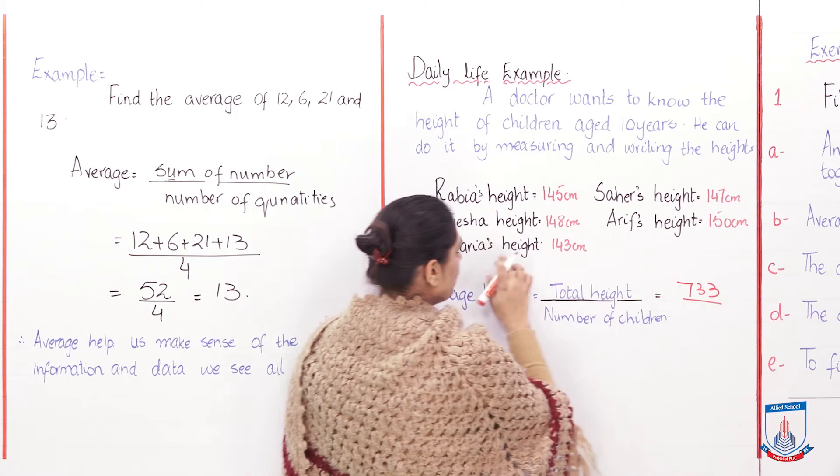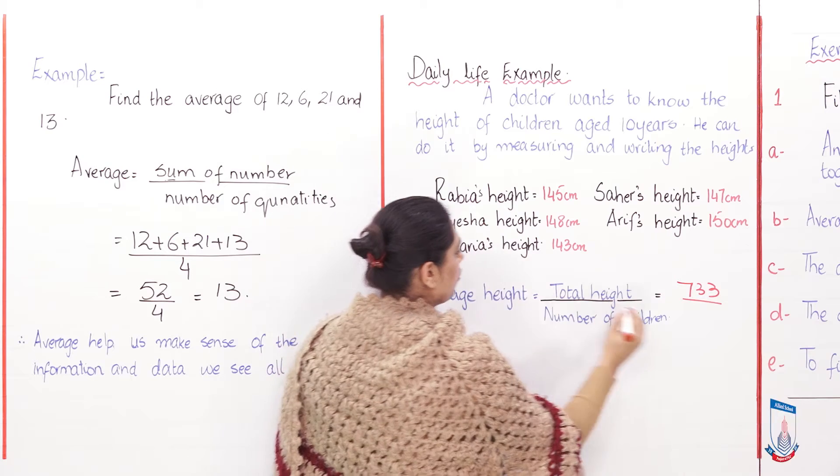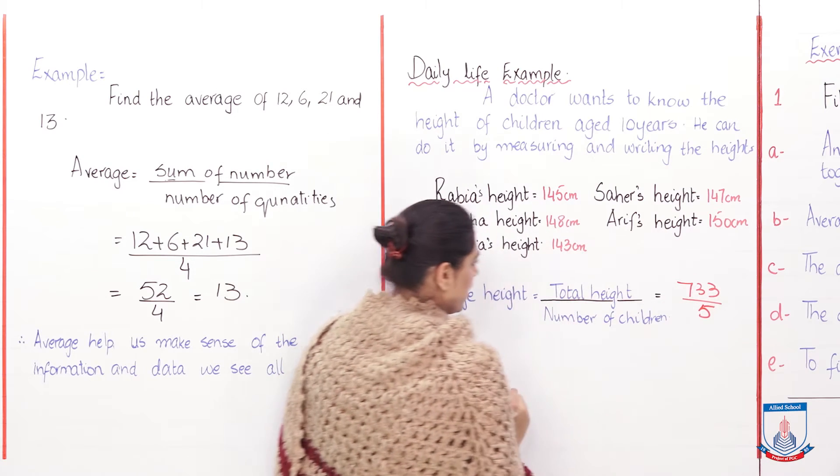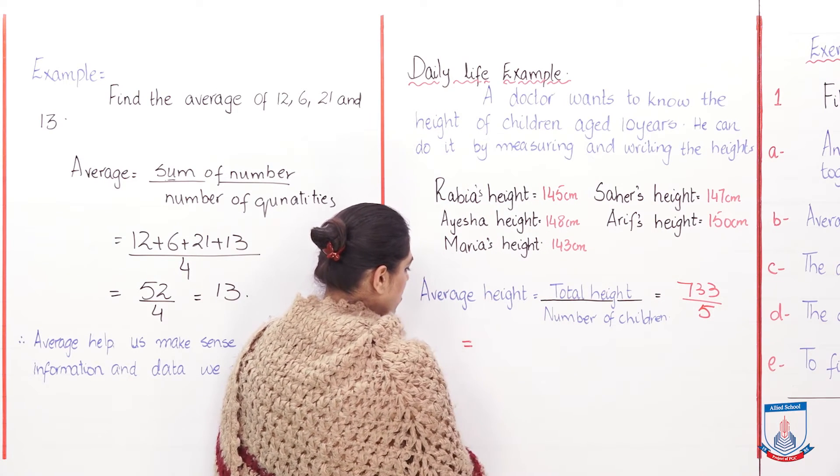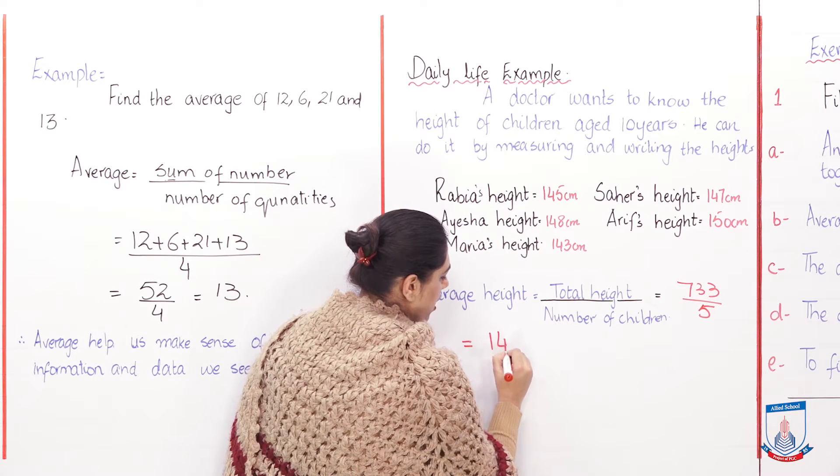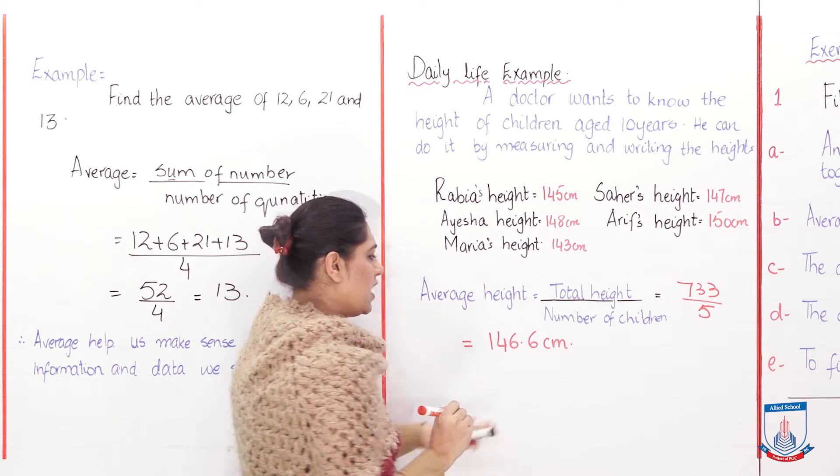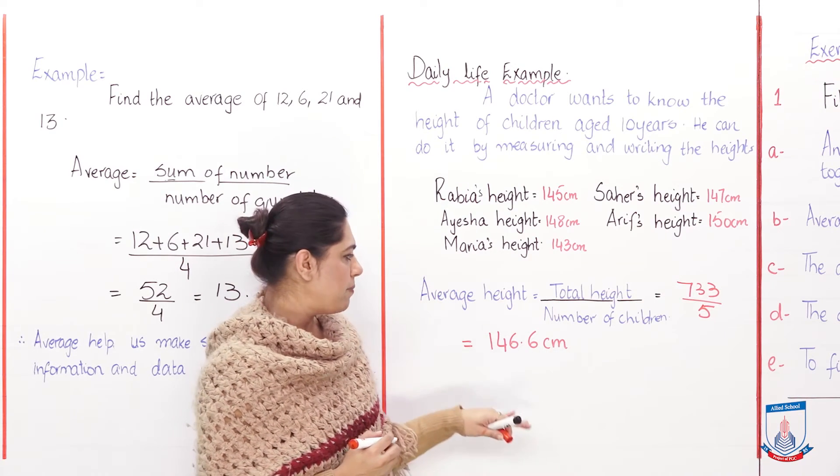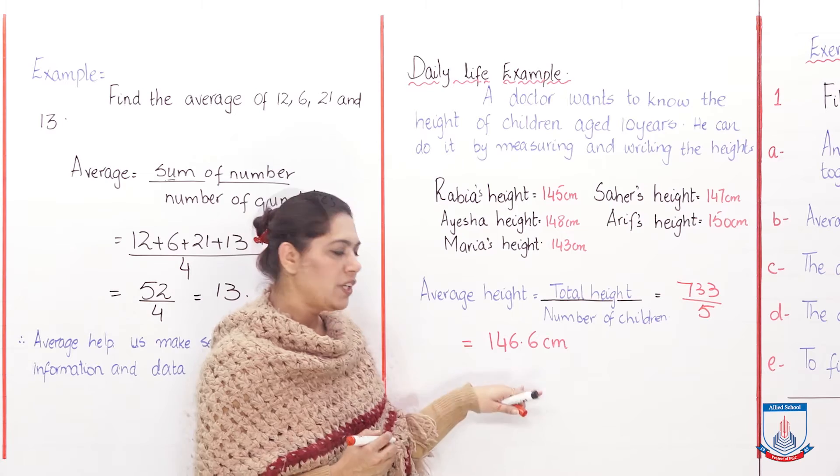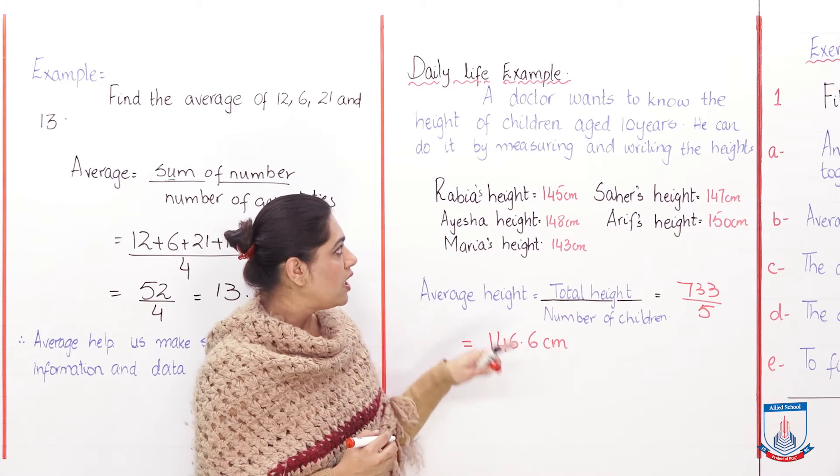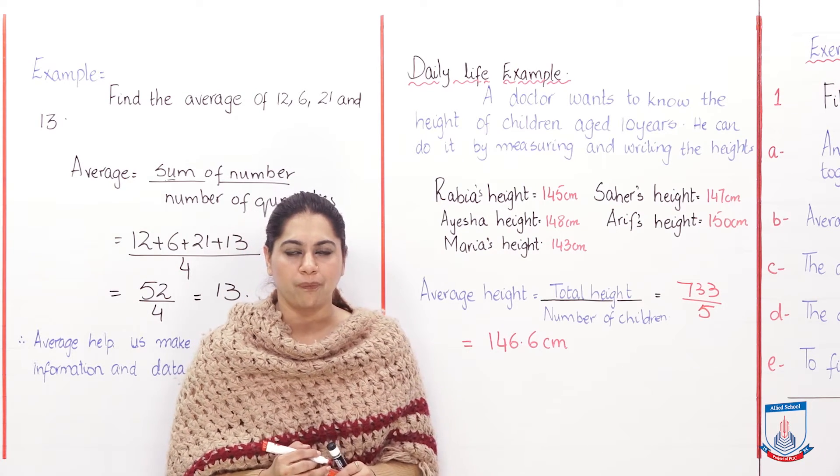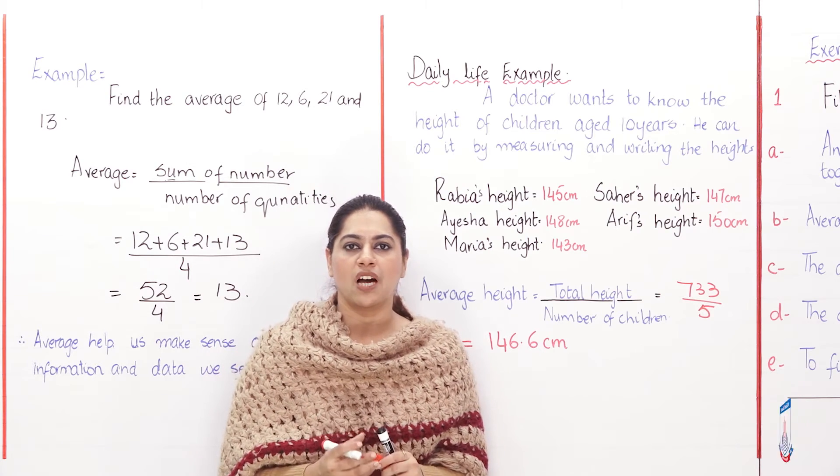And the number of children is 1, 2, 3, 4, 5, and he will divide by 5. When he divides, he will get the average: 146.6 cm. So students, this is our average height of these 5 students who are 10 years old.